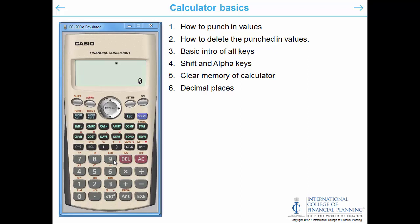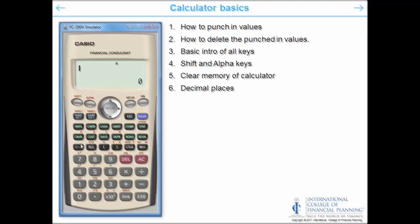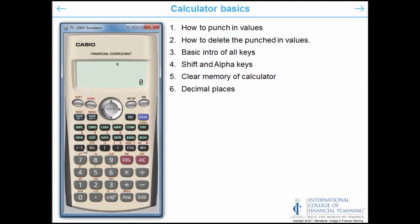Let us understand what the calculator basically is. These two rows remain most important as we will be using these functions. CMPD is the compounding function, cash function, amortization function, and convert function. These are the primary functions that we will be using in CFP.